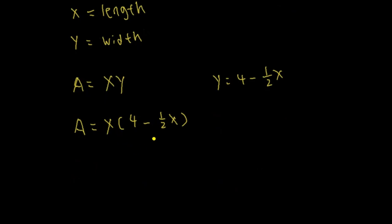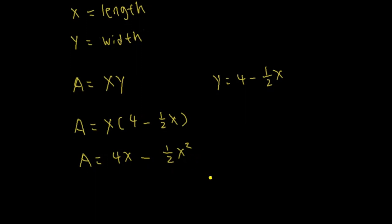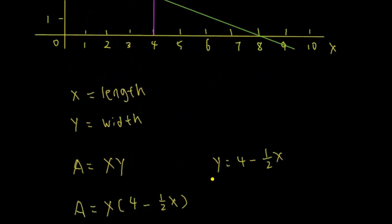Now distribute the x: the area is equal to 4x minus one-half x squared. Now we have area in terms of only the variable x, which is the length.